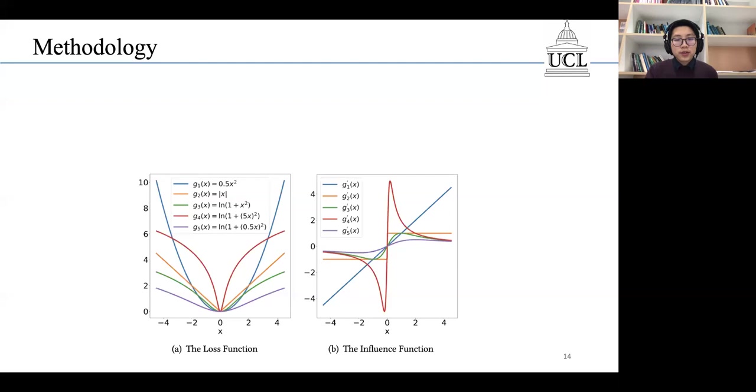We can see that the influence function of the L2 loss is linear. So, obviously, it is not robust to outliers.